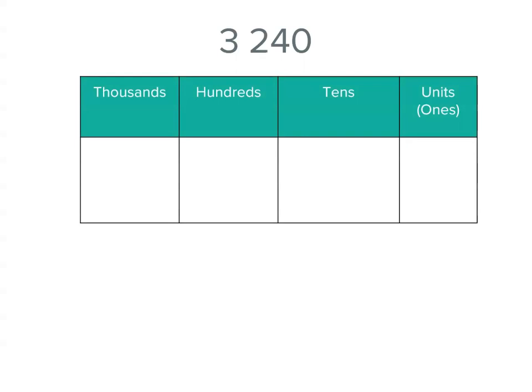We know it's got 3 thousands, 2 hundreds, 4 tens and no units. But what if we wanted to write the whole thing just using tens?